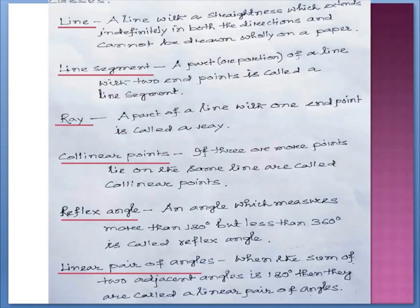First one is line. A line has straightness which extends indefinitely in both directions and cannot be drawn wholly on a paper — so it is endless. The second one is line segment: a part or portion of a line with two end points is called a line segment. The third one is ray: a part of a line with one end point is called a ray.